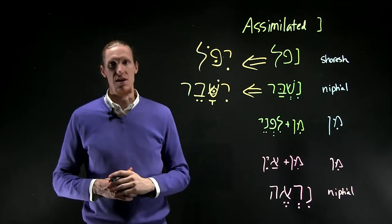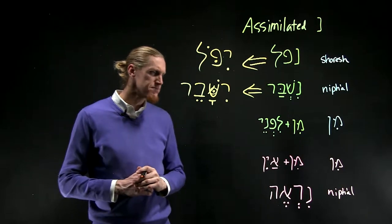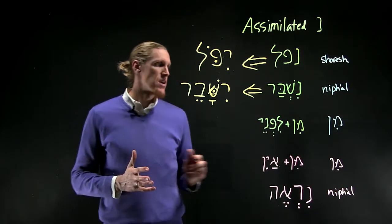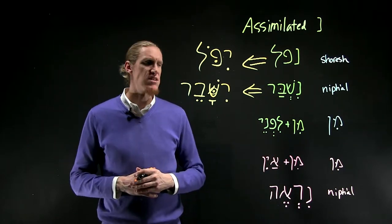So the noon, you see it there in the shin as a dagesh forte. The third occasion in which the noon can assimilate is with the preposition min. There are other possibilities,